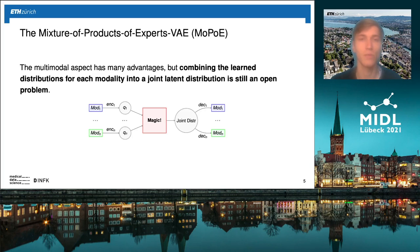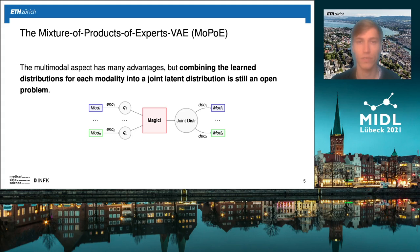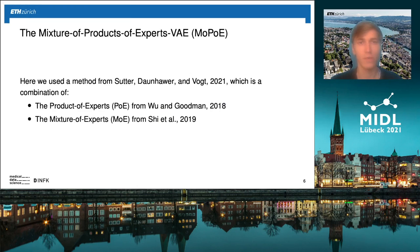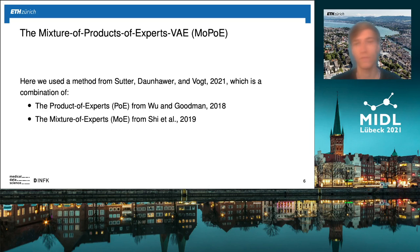We have seen that the multimodal aspect has many advantages, but combining the learned distribution for each modality into one joint latent distribution is still an open problem. We are looking for a function that merges the information of each unimodal latent distribution into one joint latent distribution such that any subset of encoded modalities can be decoded into any modality. Here we use the Mixture of Products of Experts variational autoencoder (MoPoE-VAE), the current state of the art from Zotte et al., which combines the product of experts from Wu and Goodman and the mixture of experts from Zotte et al.